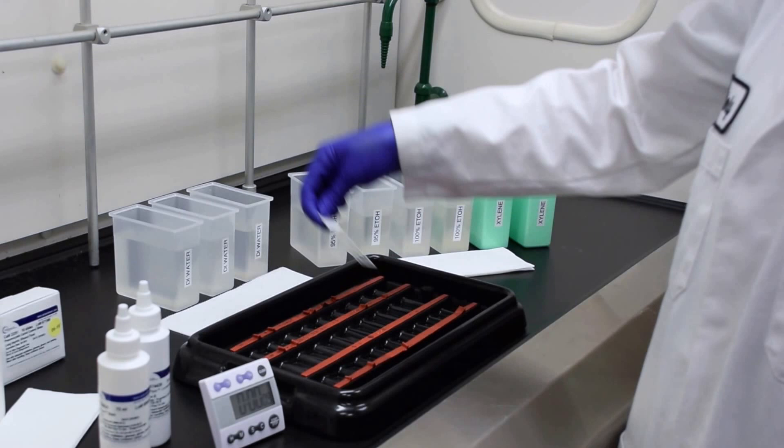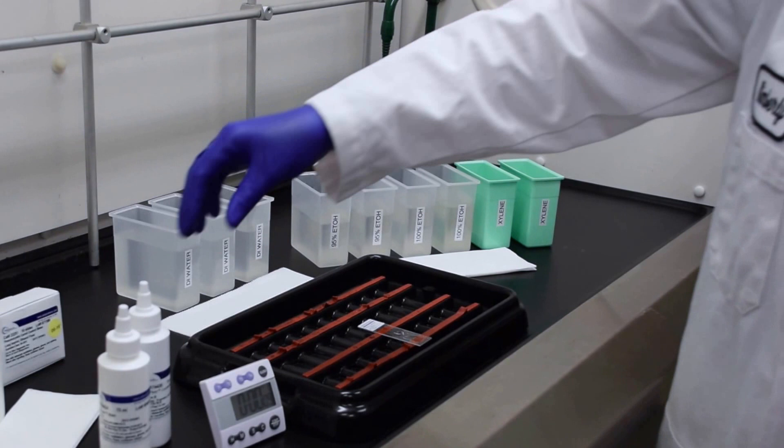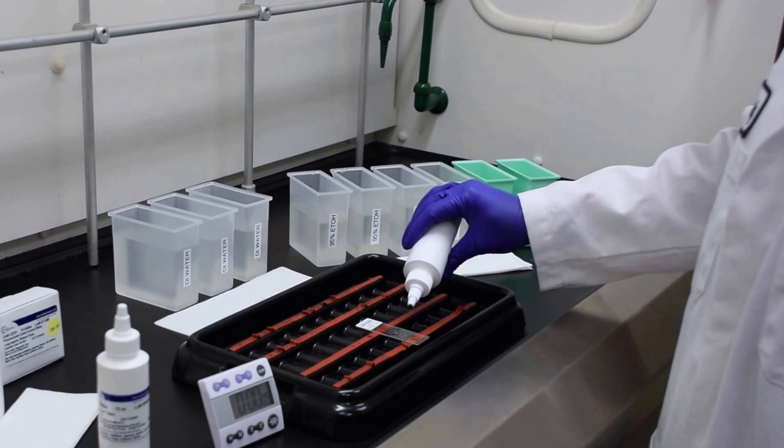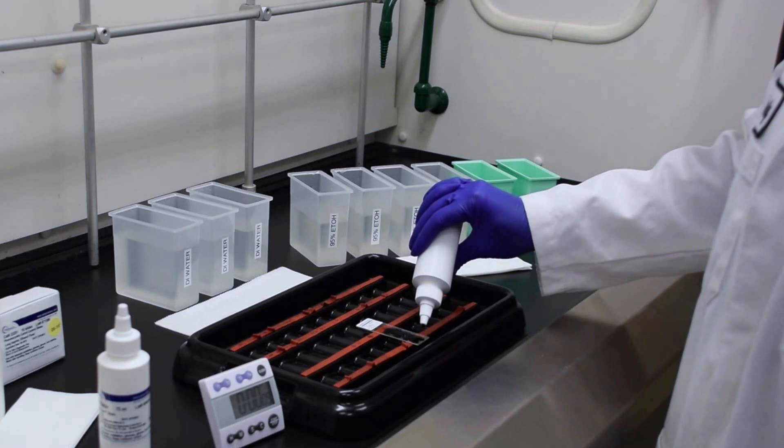Now place your slide in a horizontal position again on your staining tray and apply a few drops of solution B directly to your specimen. Again, flood the slide with the solution.